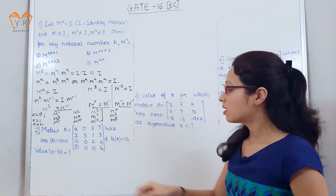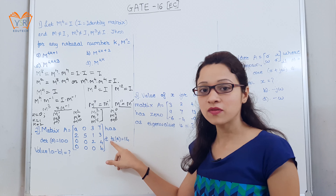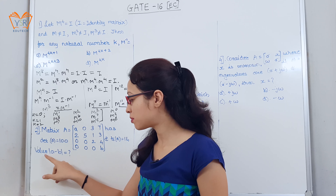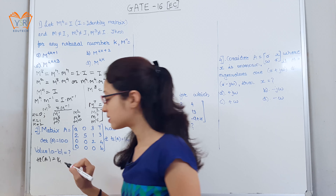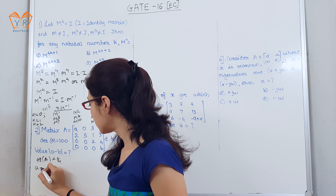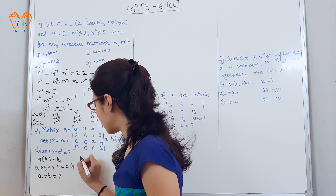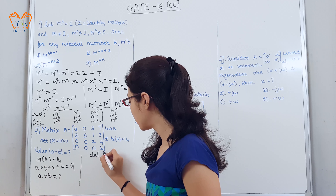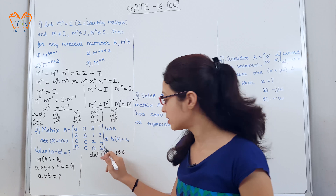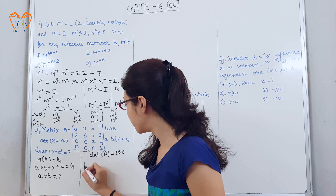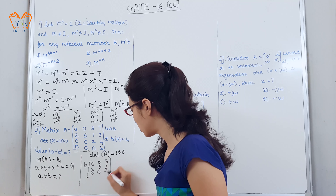The second example: matrix A, a 4×4 matrix, has determinant value 100 and the trace — that is, the sum of diagonal elements — is equal to 14. They have asked the absolute value of A minus B. We start with trace(A) = 14. The trace is A + 5 + 2 + B = 14, which gives A + B = 7. The given determinant of A is 100. We expand along the fourth row.